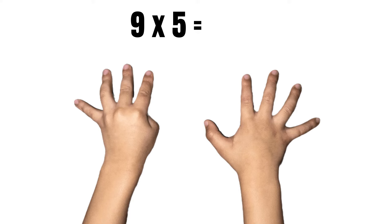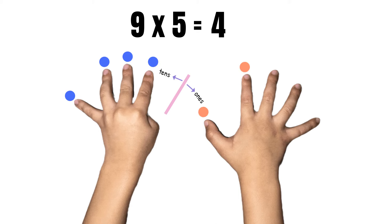Nine times five. Bend that fifth finger. How many fingers to the left? One, two, three, four. Four tens. And how many fingers to the right? One, two, three, four, five. Five ones. So nine times five equals 45.